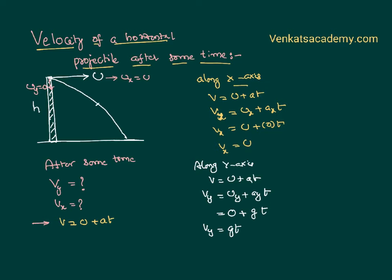To find the velocity of the body after some time, I have a formula: V⃗ = Vx î + Vy ĵ. Vx is u, as I proved. Vy is gt.